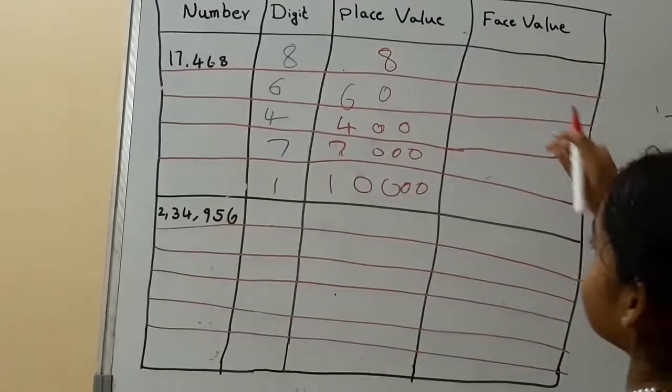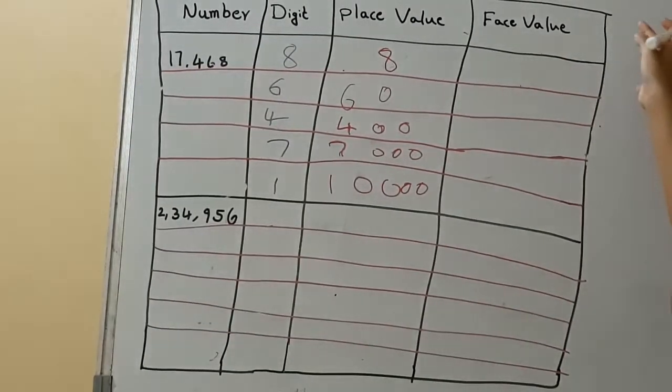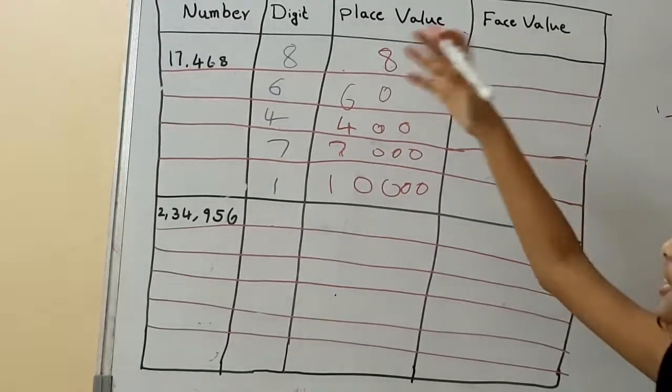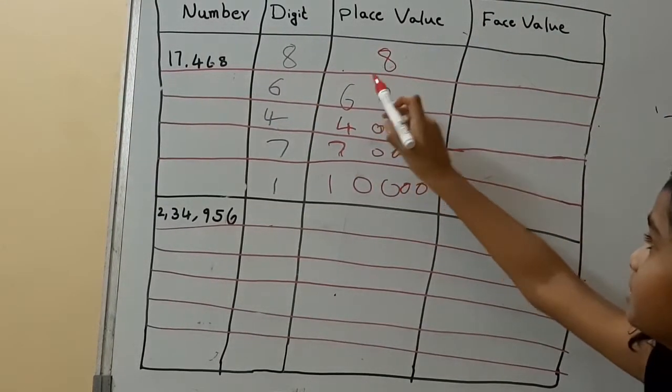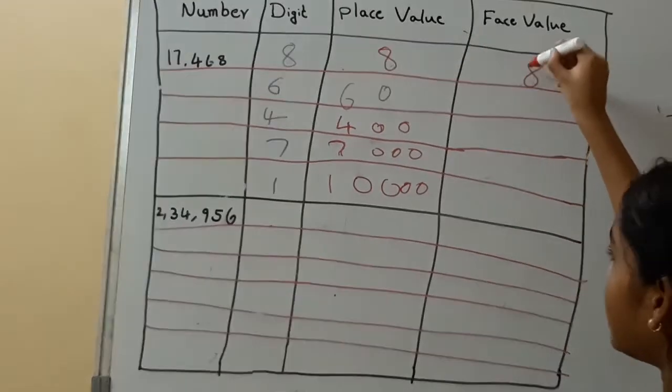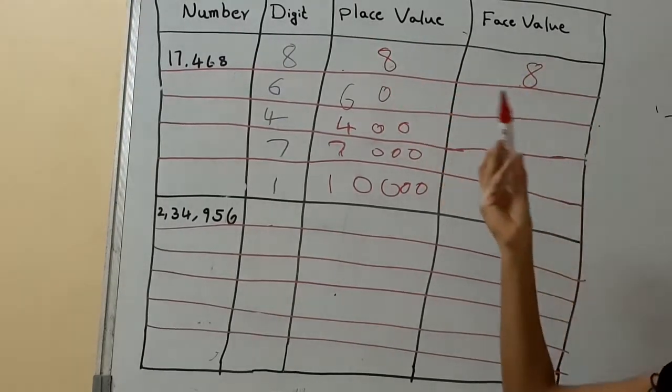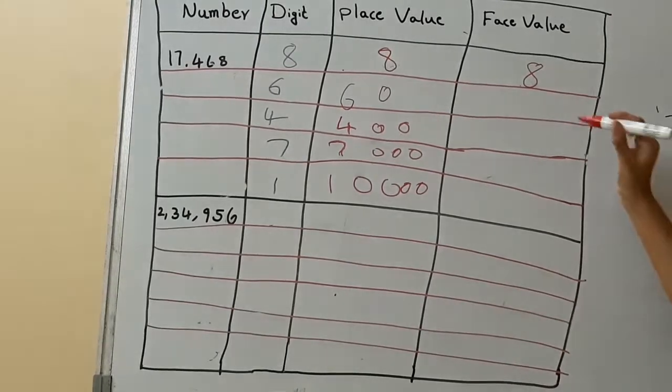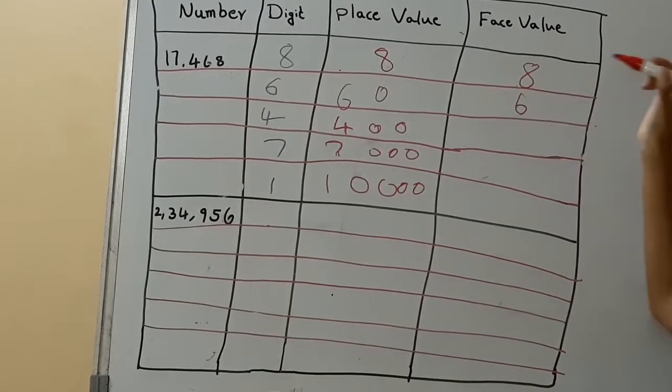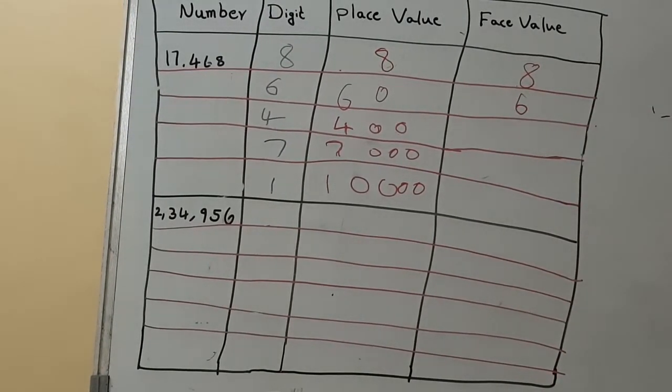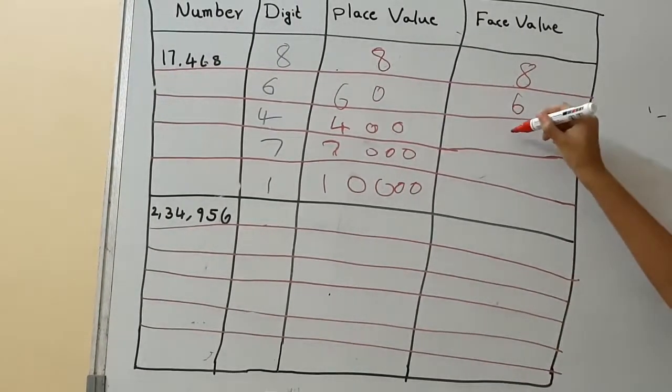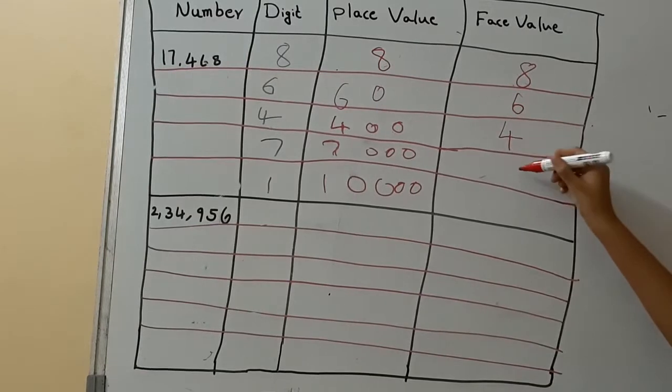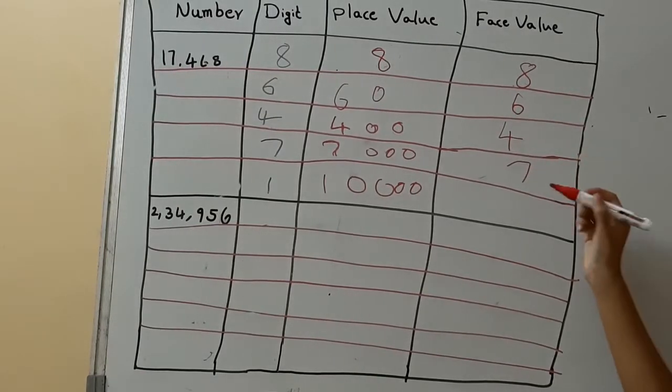The face value is also like digits. So the face value for 8 is 8, and for 6 the face value is 6, because it's a face value. Nothing is different, it's face value. And the 4 is 4, 7 is 7, 1 is 1.